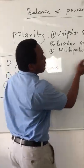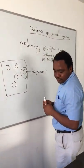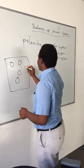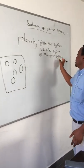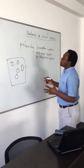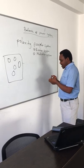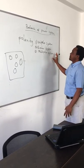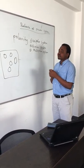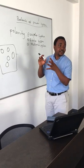When we talk about the multipolar system, which we are emphasizing much more today, it is whereby we have a number of more influential states — big powers — existing within the international system. Then we say that we are in a multipolar international system. And the multipolar international system is what we call the balance of power.